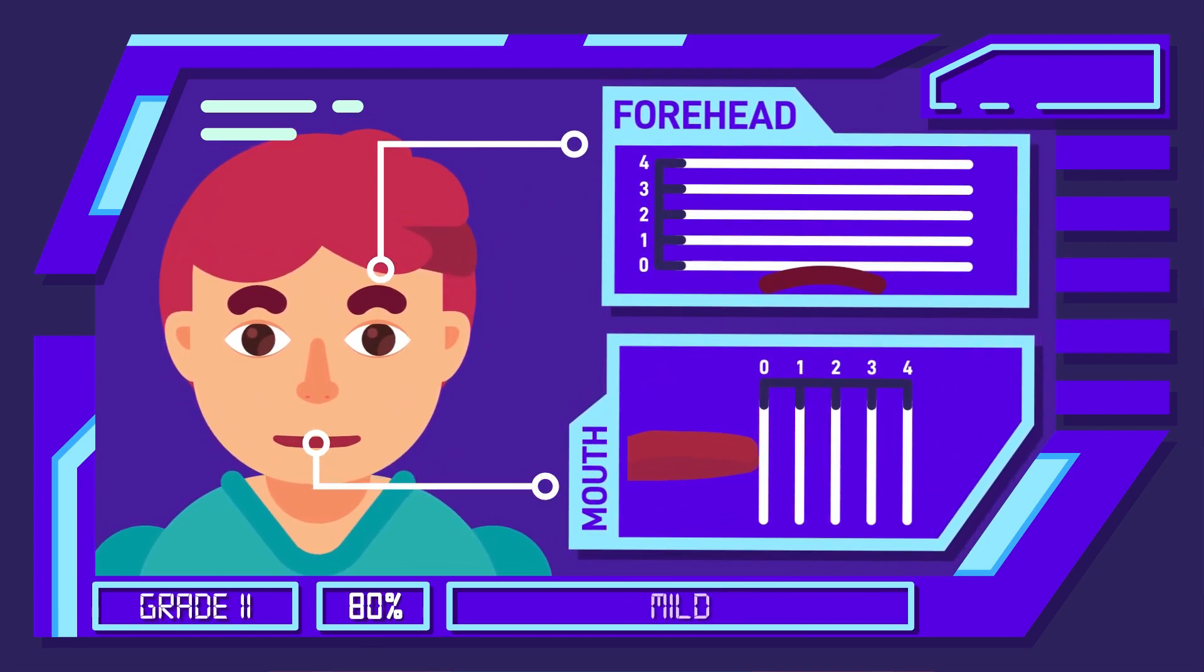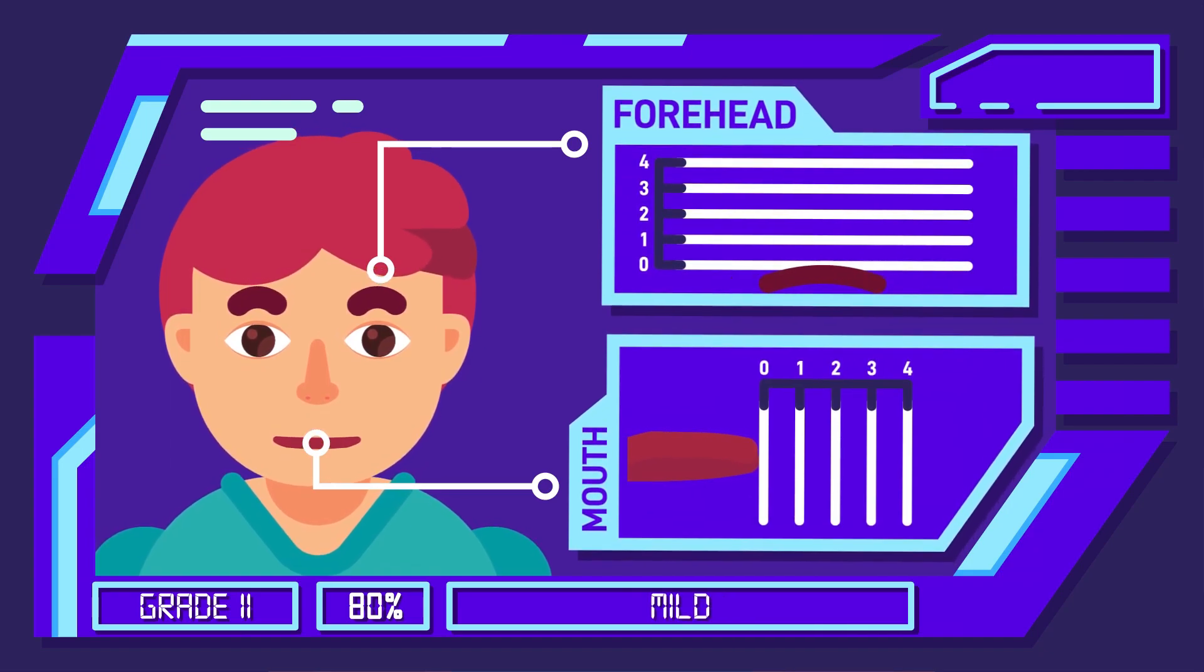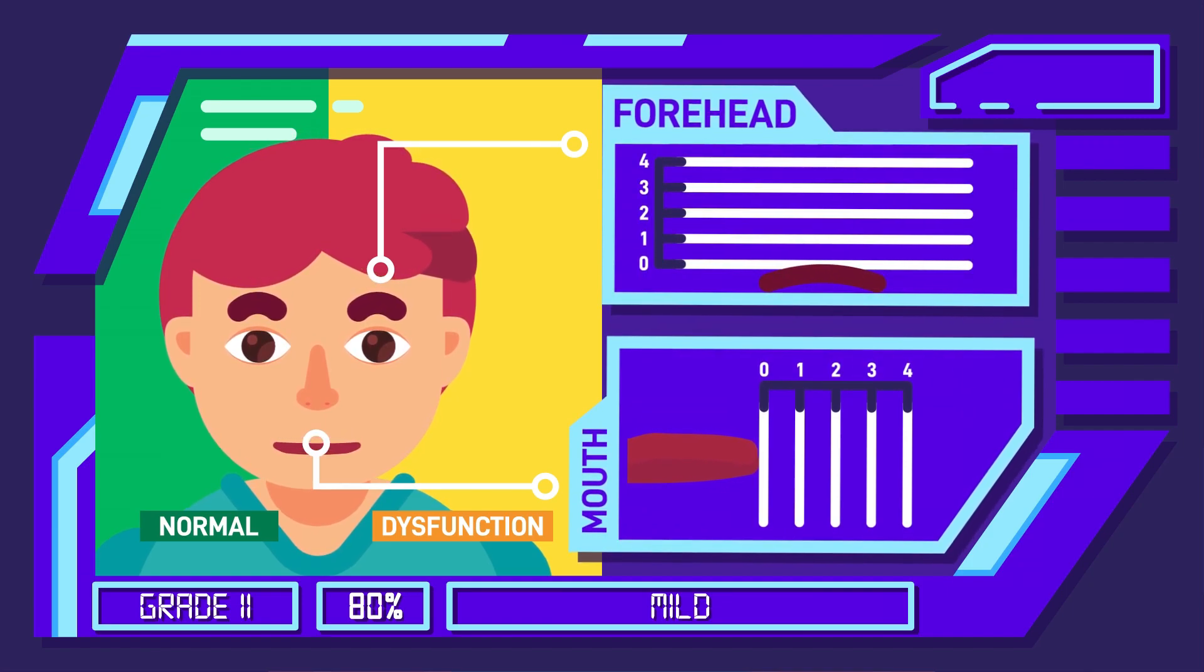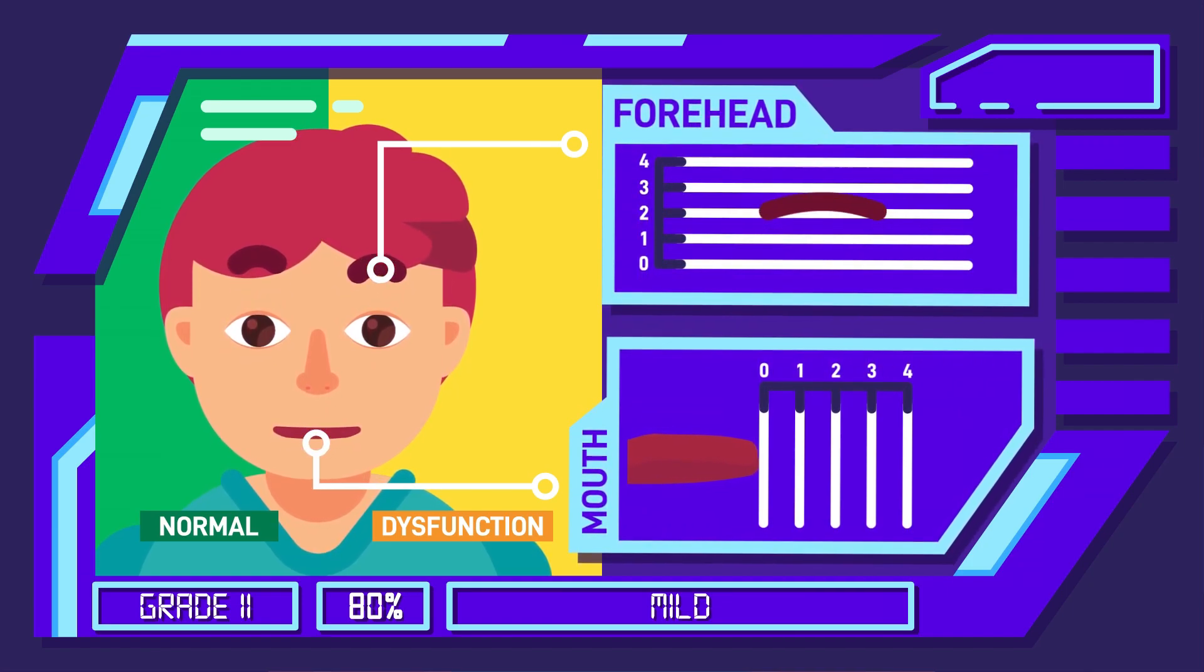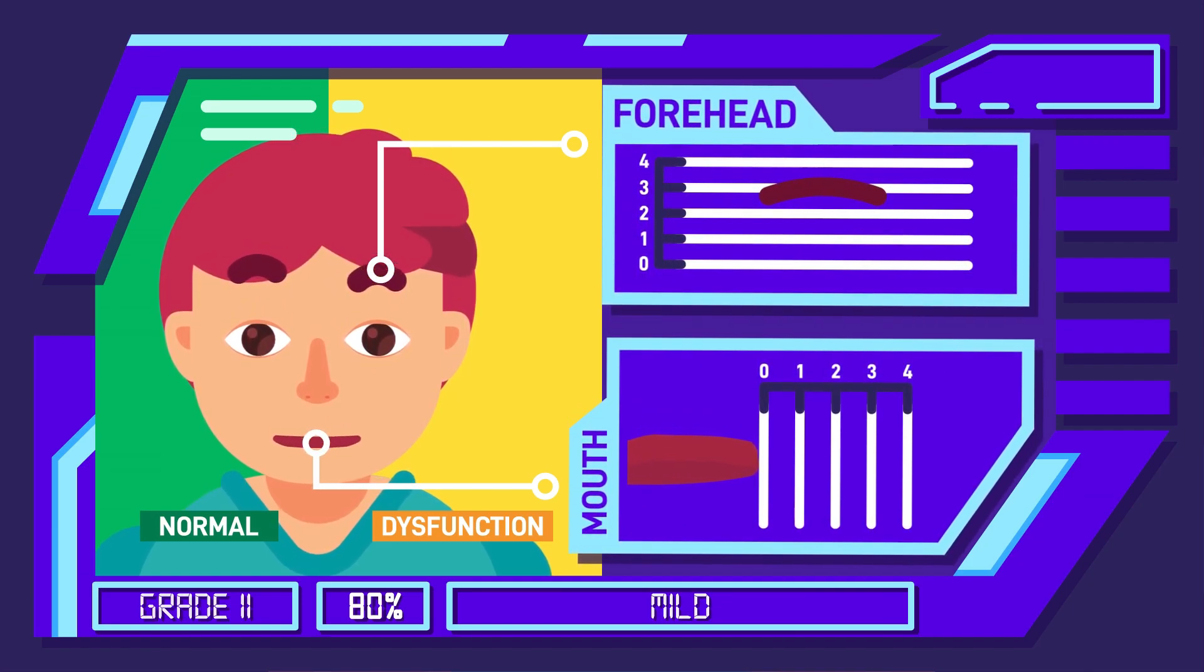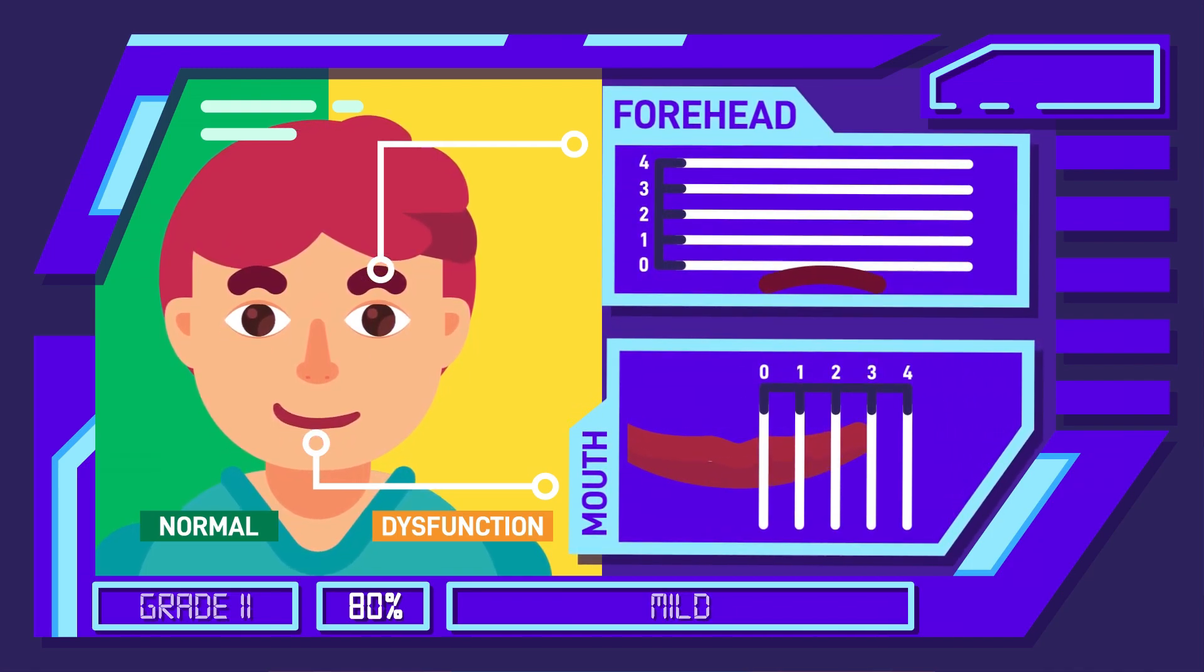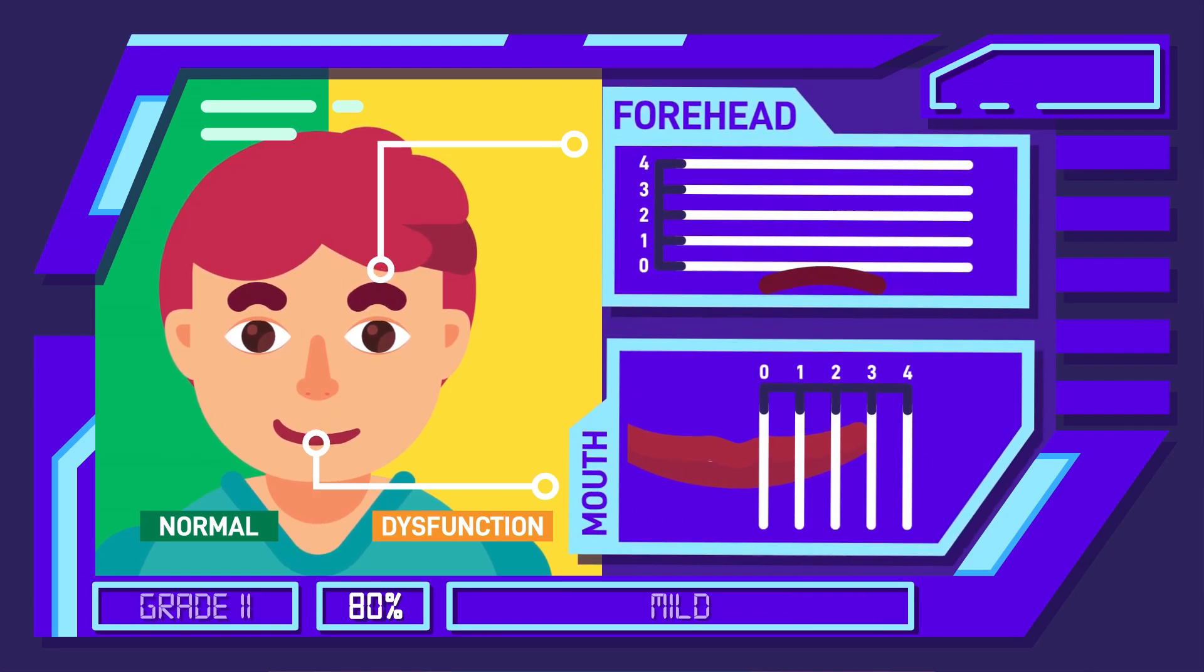People with mild dysfunction are assigned with grade 2. At rest, their faces look normal and symmetrical. Their forehead moves, observed by raising the eyebrows, are limited on a reasonable level and their mouths are slightly asymmetrical when smiling, which is only noticeable on close inspection.